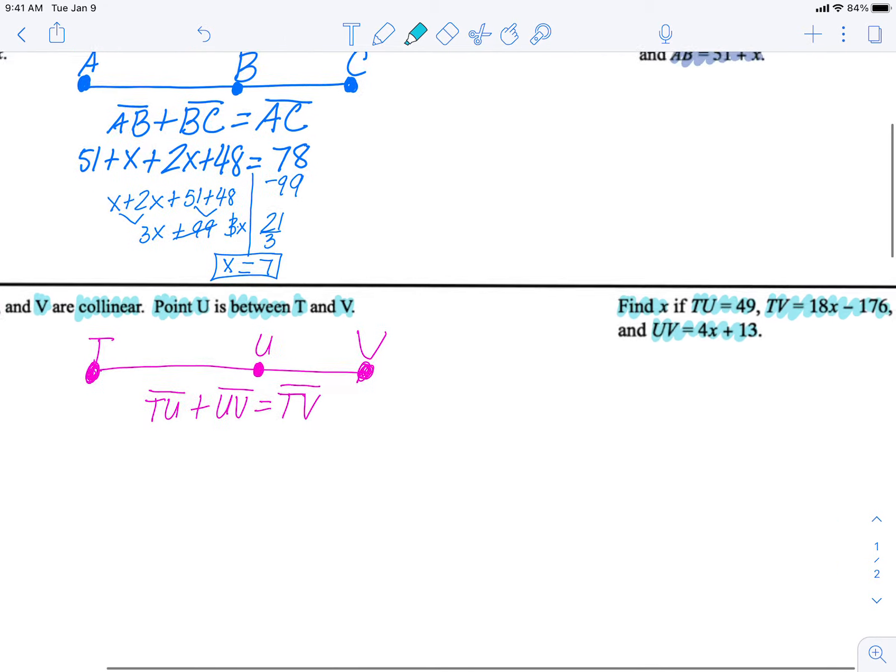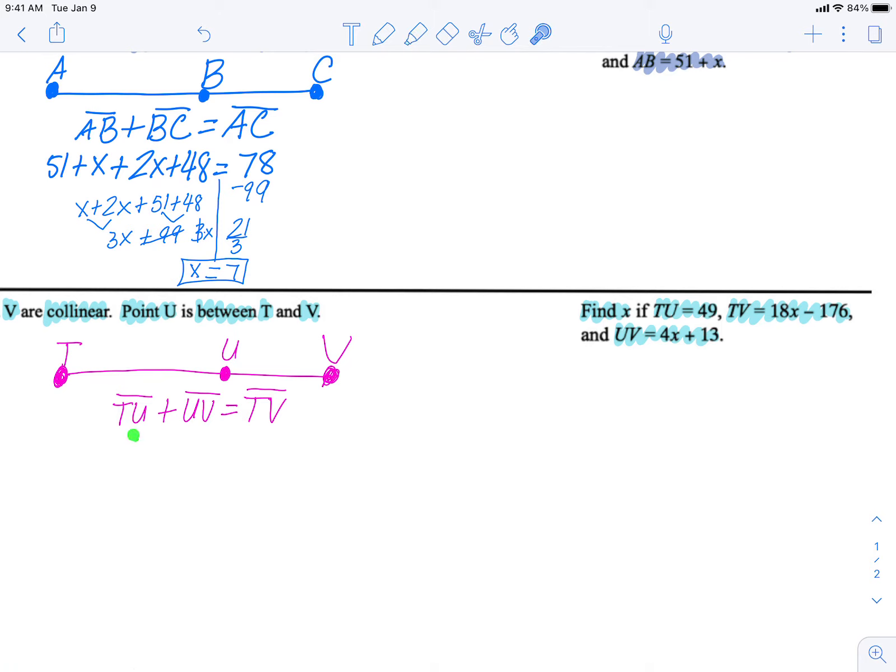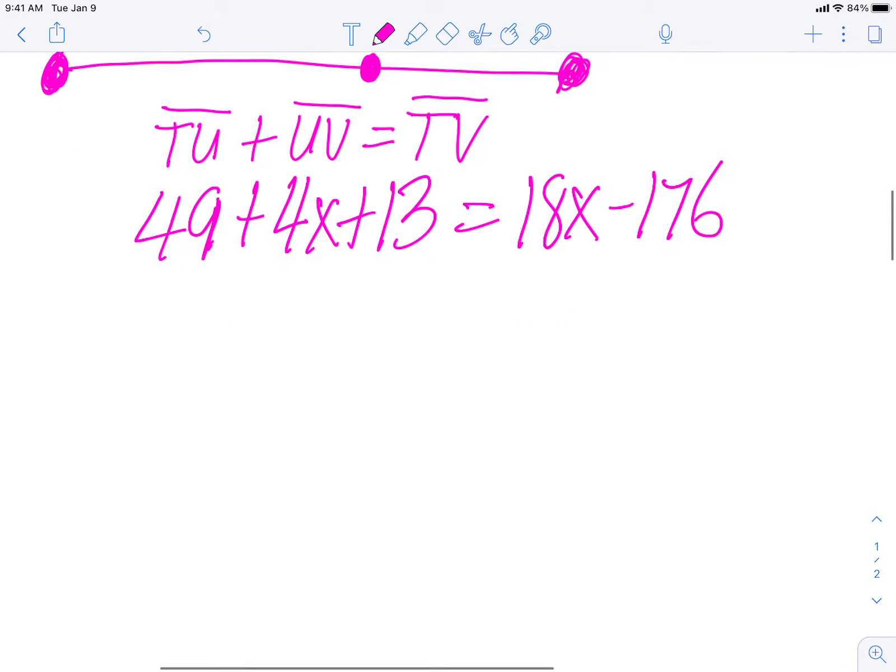So let's fill in our information here. TU is 49, so I'm going to say 49 here plus UV. UV is 4x plus 13, so 4x plus 13 is equal to TV. TV is 18x minus 176.